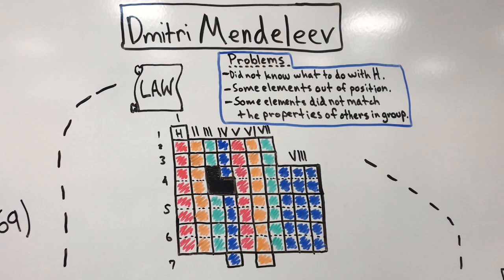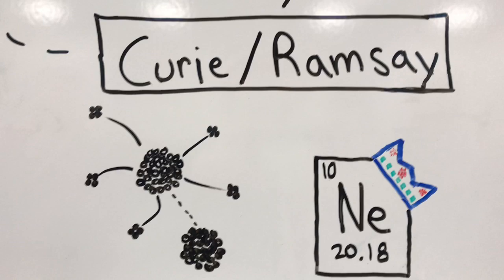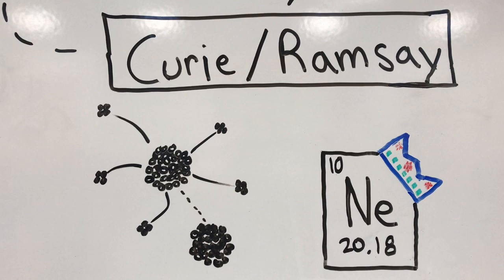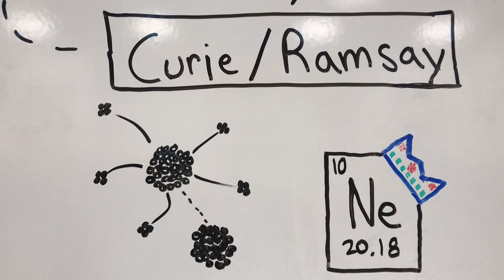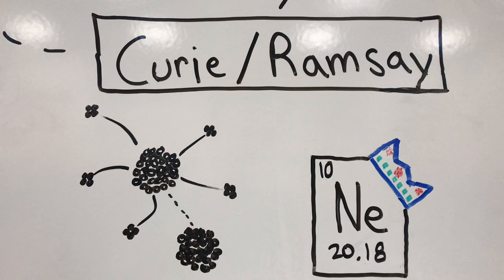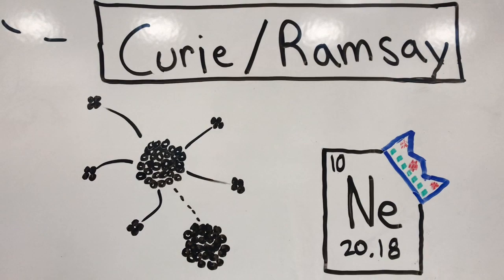Mendeleev was one of the greatest contributors to the modern periodic table that we have today. After Mendeleev created his periodic table, scientists like Curie and Ramsay came along and added elements. Curie worked on radioactive elements such as uranium and added a few elements that were radioactive. Ramsay came along and added the noble gases to Mendeleev's table.